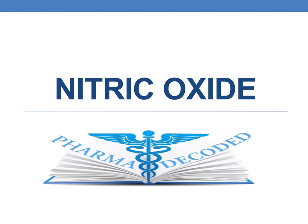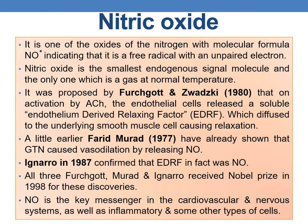Let us discuss nitric oxide. It is one of the oxides of nitrogen with molecular formula NO·. That dot indicates it is a free radical with an unpaired electron. Nitric oxide is the smallest endogenous signal molecule and the only one which is a gas at normal temperature.